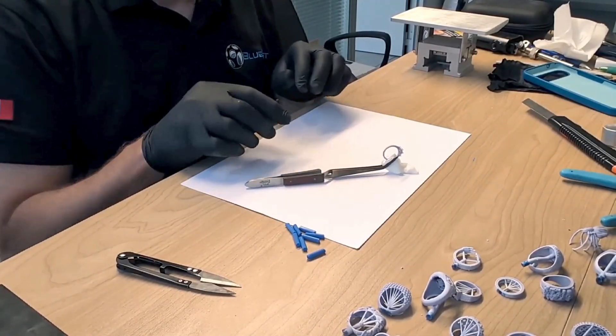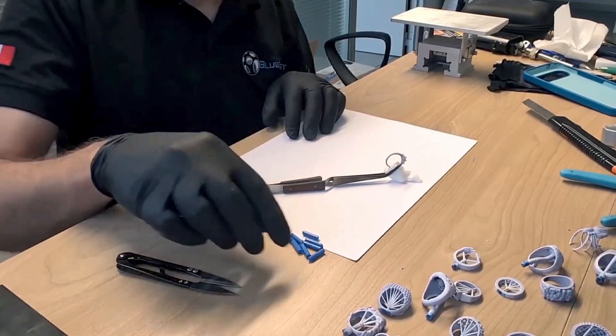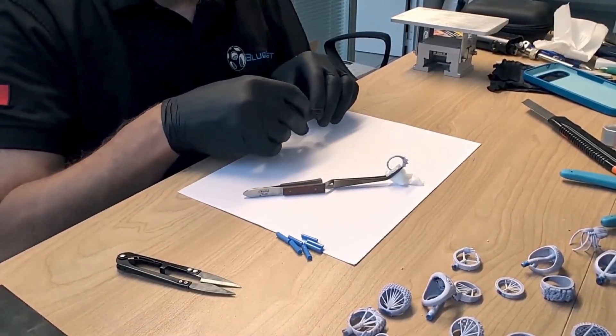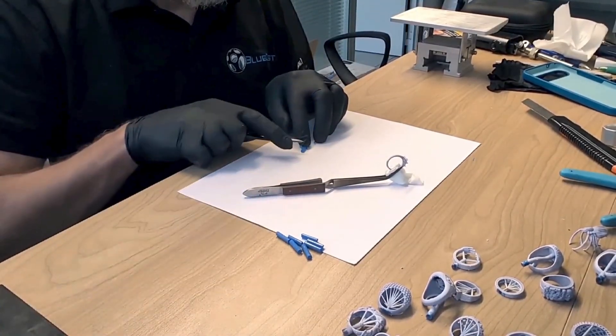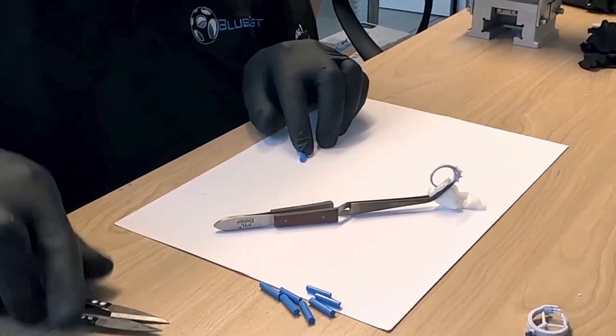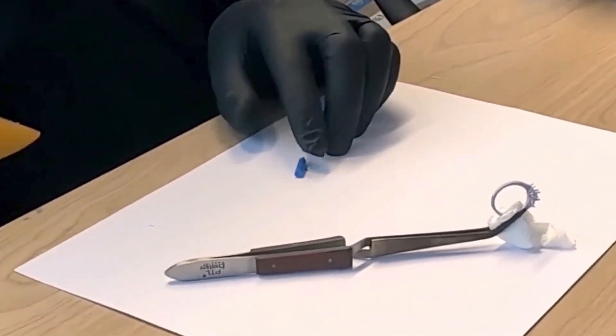I usually use a third hand tool to hold the model steady, but it would have blocked too much of the view. It would have made the tutorial difficult to see, so I chose to use reverse tweezers instead. A piece of paper towel will help me avoid damaging the models.